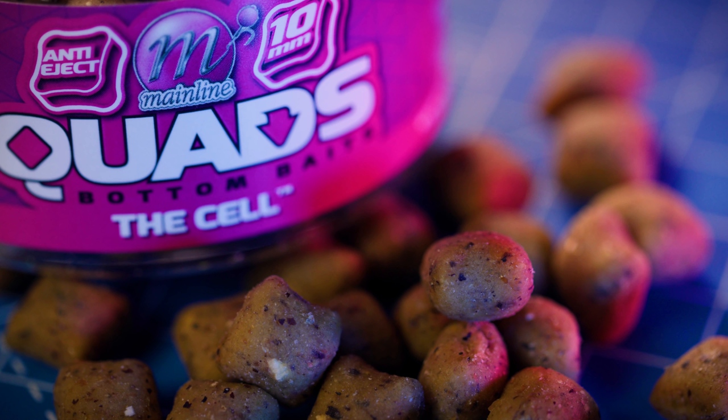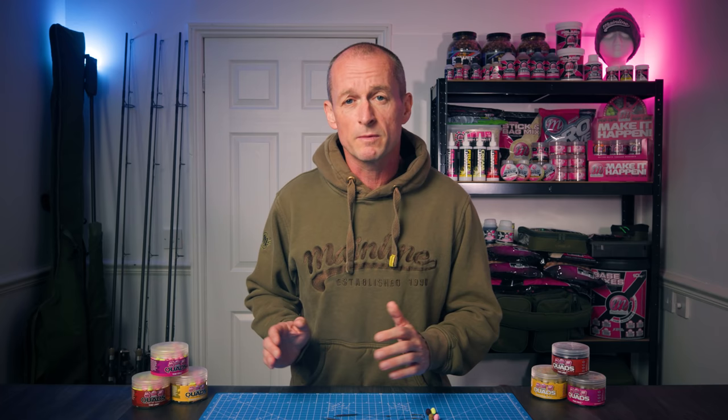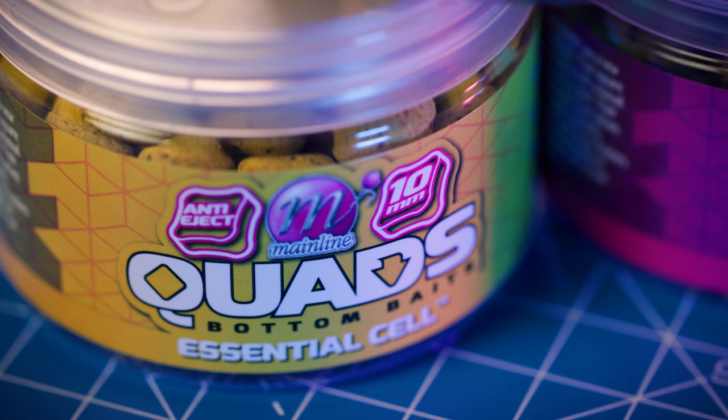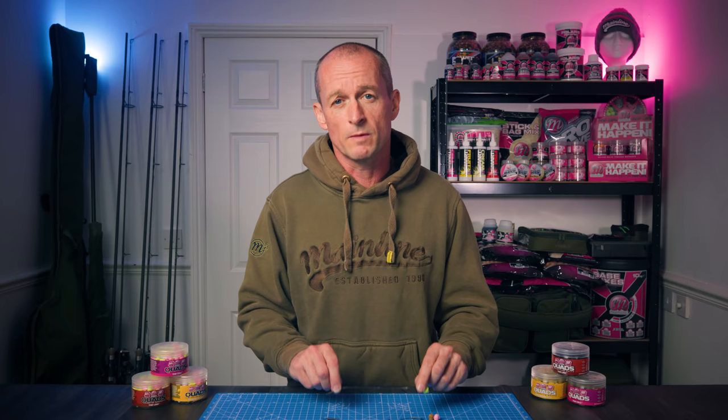We've got a pop-up version and a bottom bait version, and both come in three different flavors to match your favorite food source boilies: the Cell, the Essential Cell, and the Link.